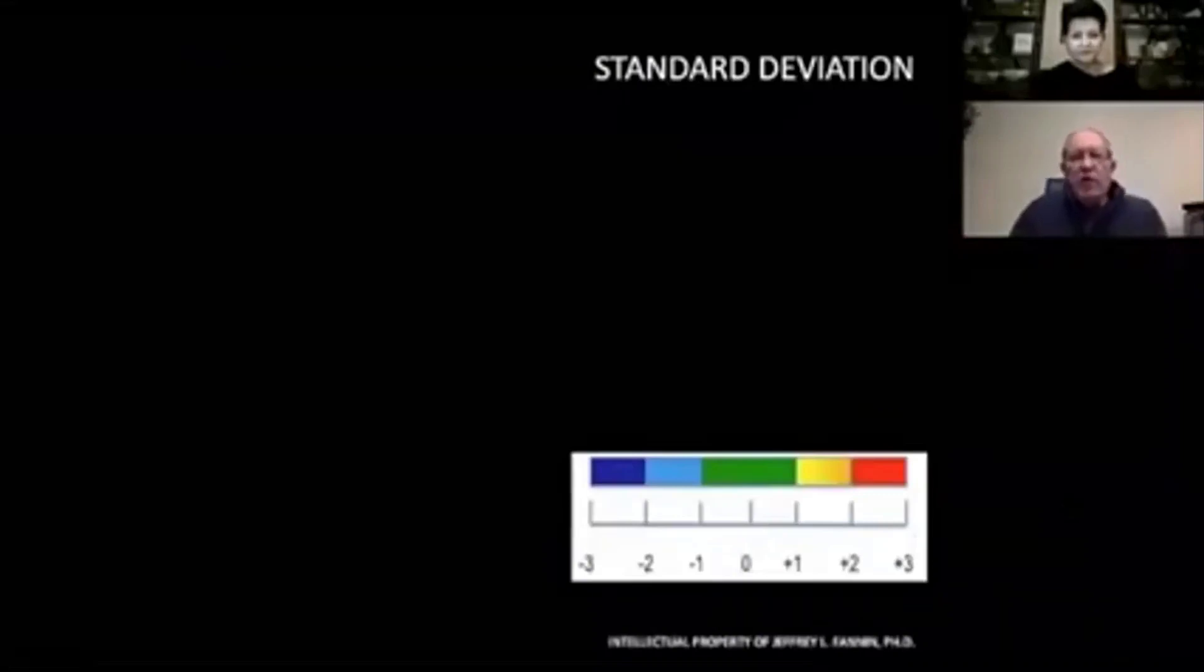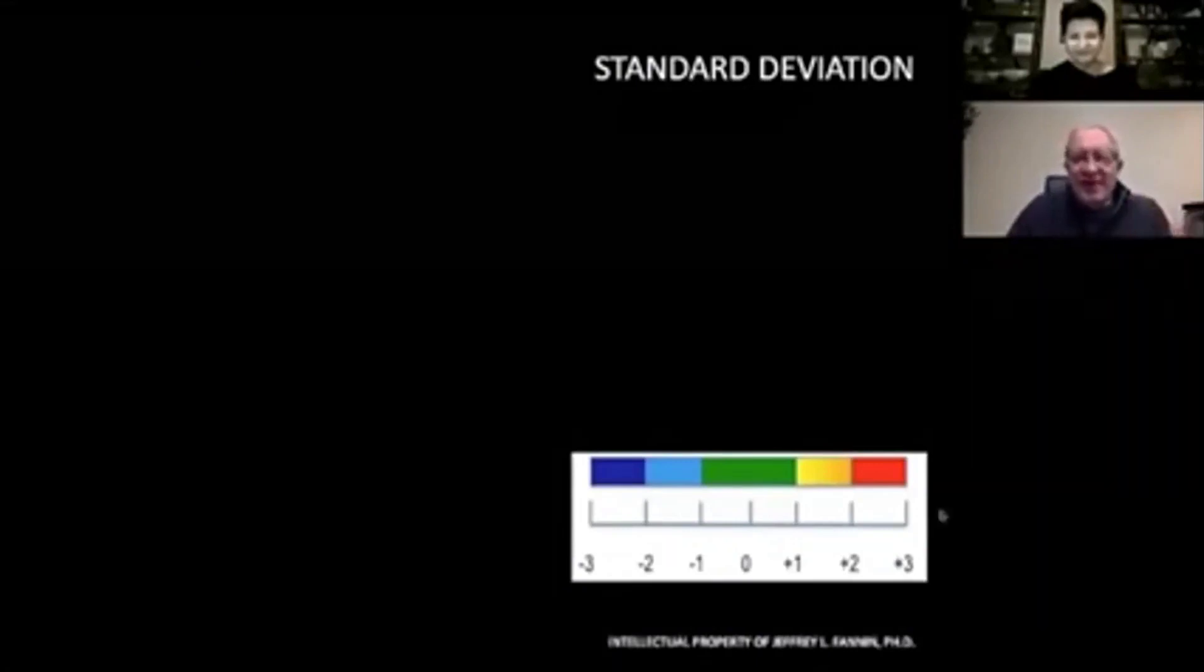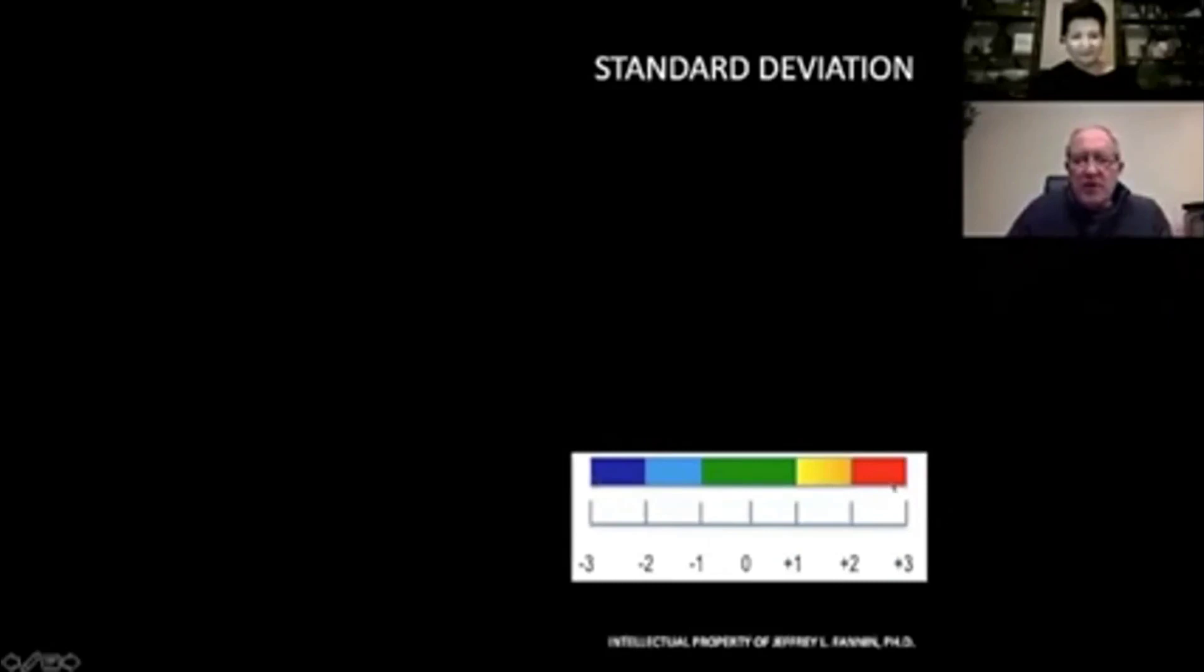For those of you who aren't aware of what a brain map is, let me give you just a real short course. We see this legend down here where it goes from dark blue, light blue, green, yellow, orange, and red. These are based on standard deviations, how far away from normal is something.